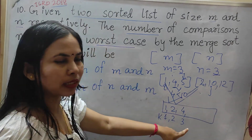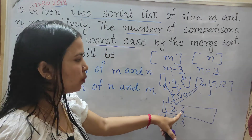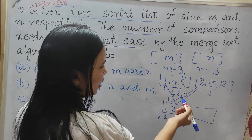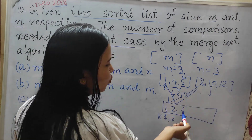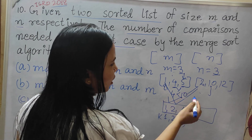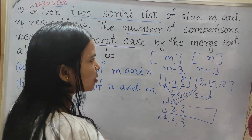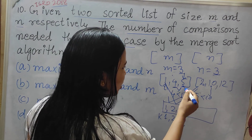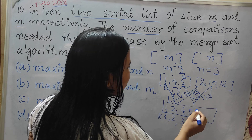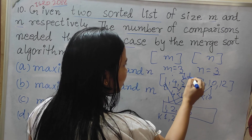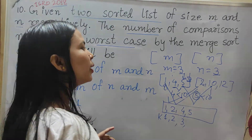How many times are we comparing? 3 times, getting the third element. Now 5 comes because 4 was stored. 5 is less than 10 — yes. 5 is lesser, so 5 is stored and I is increased. Now there are no more elements on the I side.